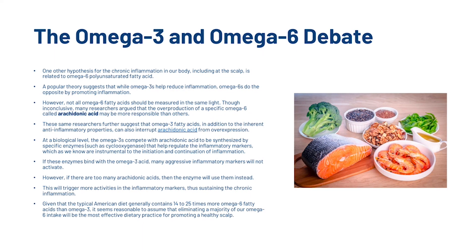Now let's look at the omega-3 and omega-6 debate. One hypothesis for chronic inflammation, including at the scalp, relates to omega-6 polyunsaturated fatty acids. A popular theory suggests that while omega-3s help reduce inflammation, omega-6s do the opposite by promoting it. However, not all omega-6 fatty acids should be measured in the same light. Many researchers argue that the overproduction of a specific omega-6 called arachidonic acid may be most responsible, and that omega-3 fatty acids — in addition to their anti-inflammatory properties — can interrupt arachidonic acid from overexpression.